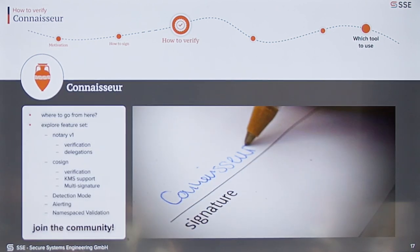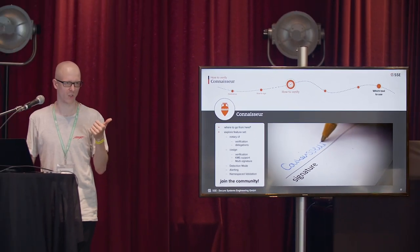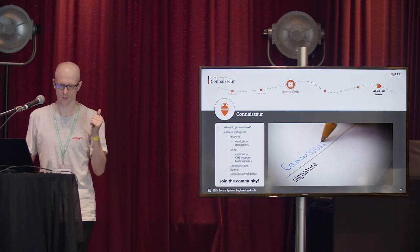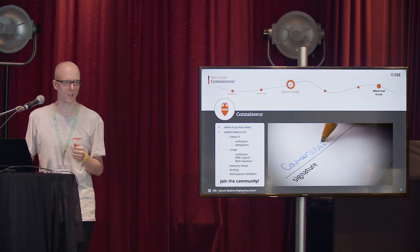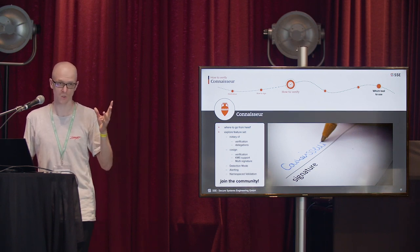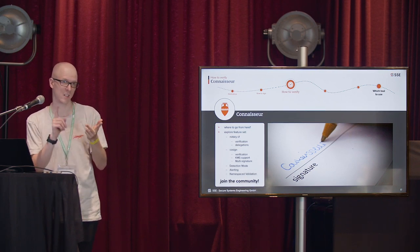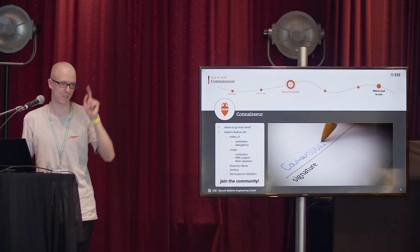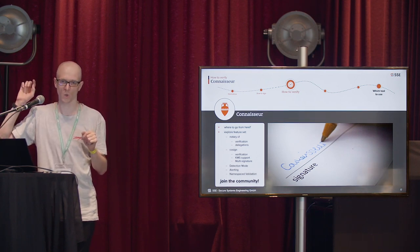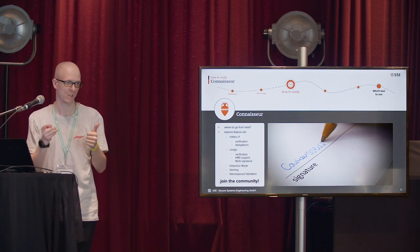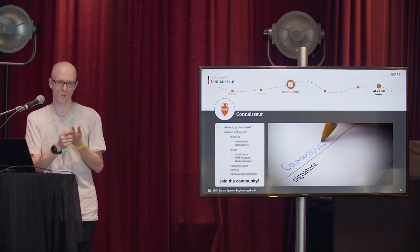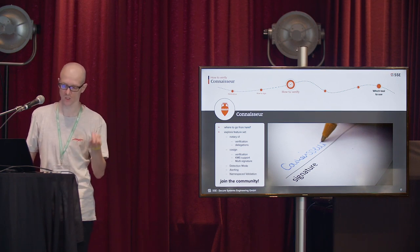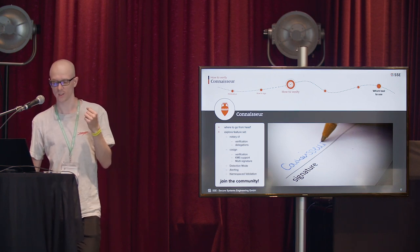Where to go from here? If you want to have a closer look at Connoisseur, you can explore our feature sets. We allow for verification of Notary v1 and Cosign, and support some of the features those tools actually provide. So for Notary, the delegation of different keys — for example, you could define delegations such as linting, testing, and scanning in your pipeline, let all of these steps give a signature to your image, and at the end when you deploy, check whether linting, testing, and scanning ever ran by checking all three signatures. The same works for Cosign.